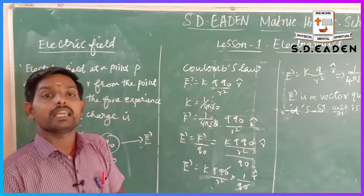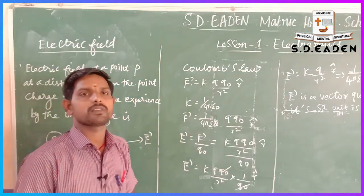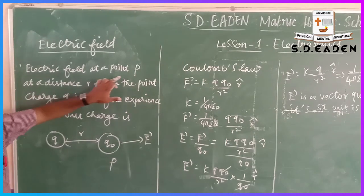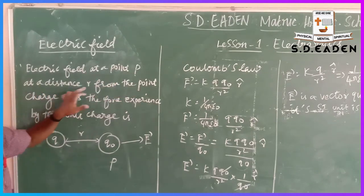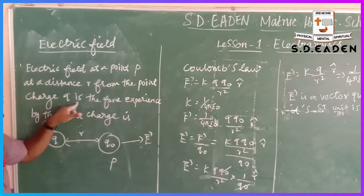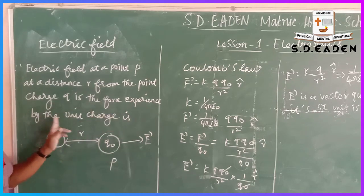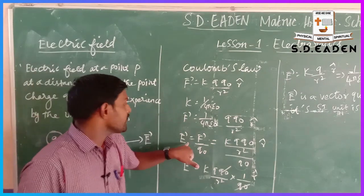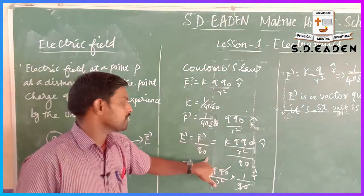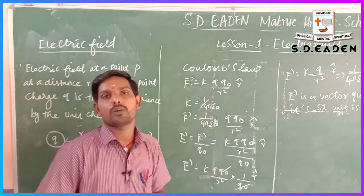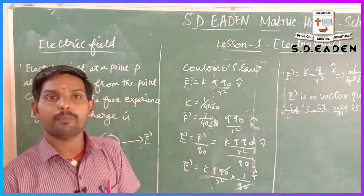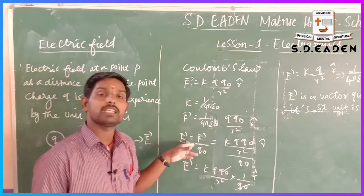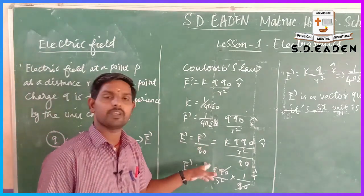The definition of electric field: the electric field at a point P at a distance r from the point charge q is the force experienced by a unit positive charge. The expression is: E vector = F vector / q0. This is the definition and expression for electric field.